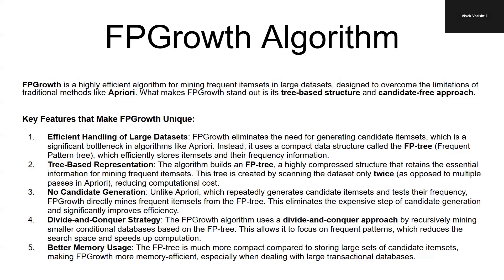Unlike Apriori, which repeatedly generates candidate item sets and tests their frequency, FP Growth directly mines frequent item sets from the FP tree. This eliminates the expensive step of candidate generation and significantly improves efficiency.